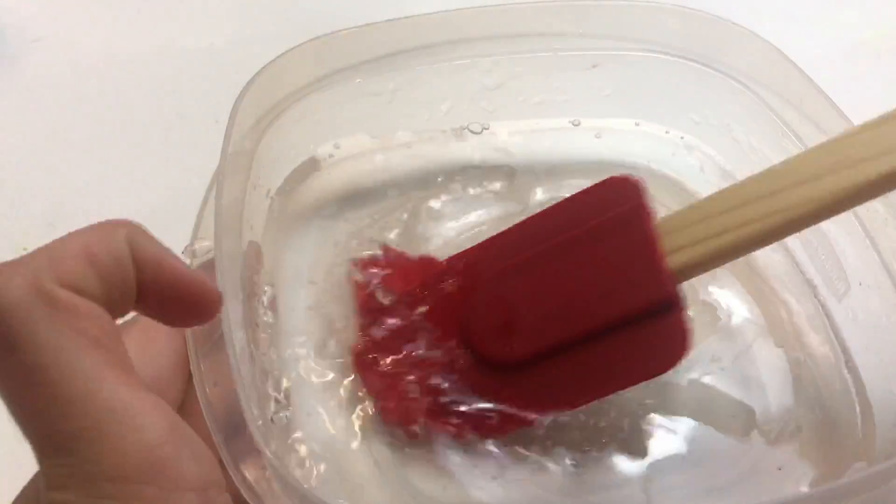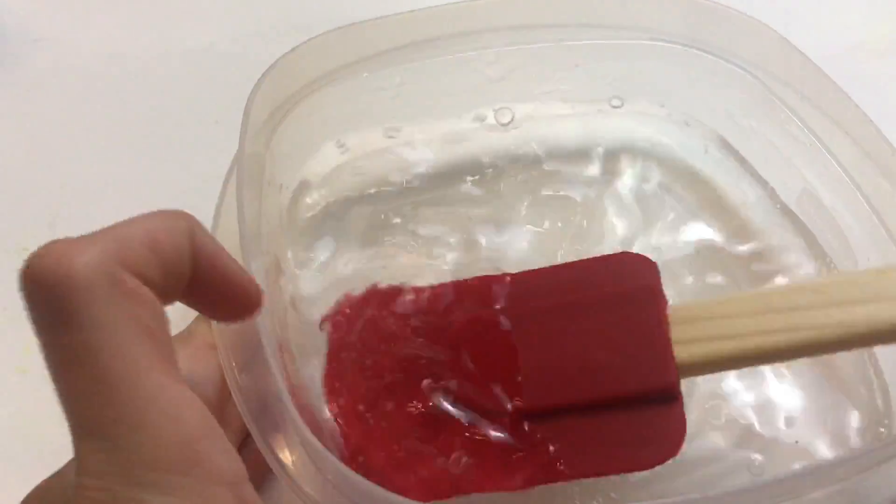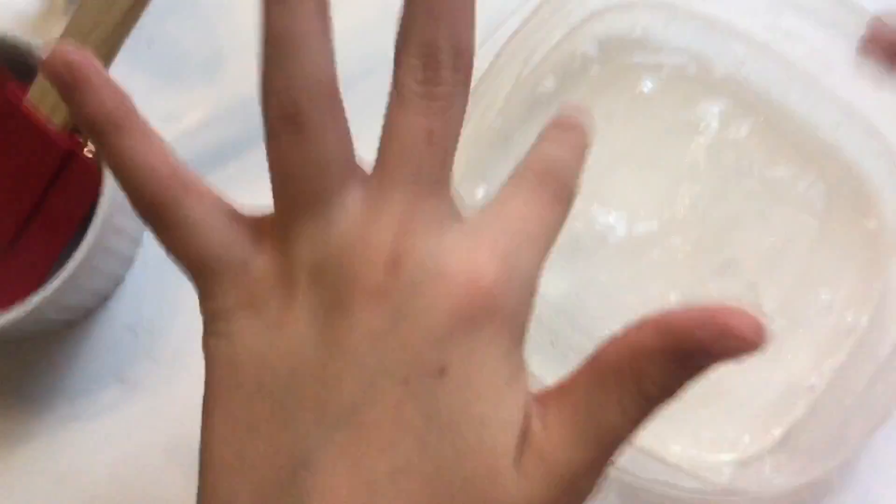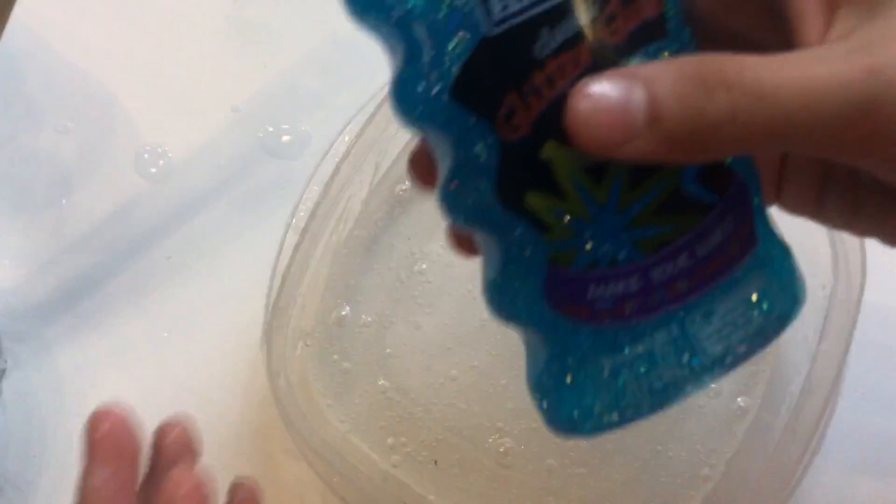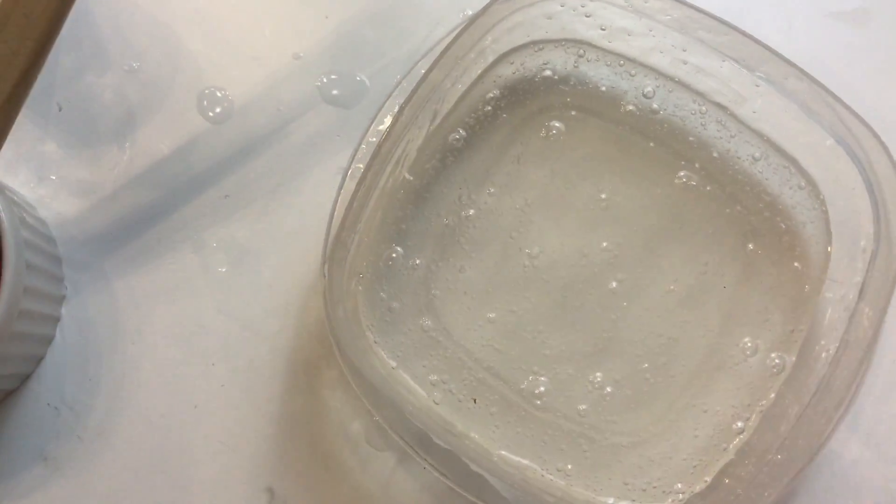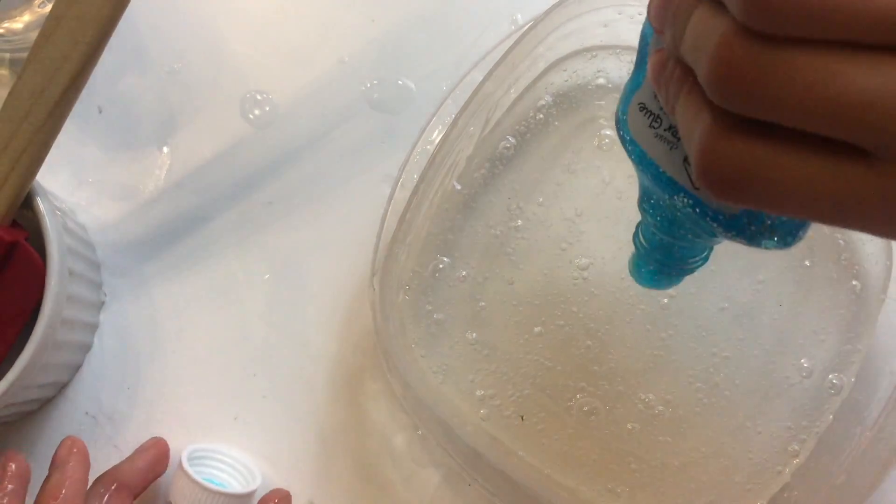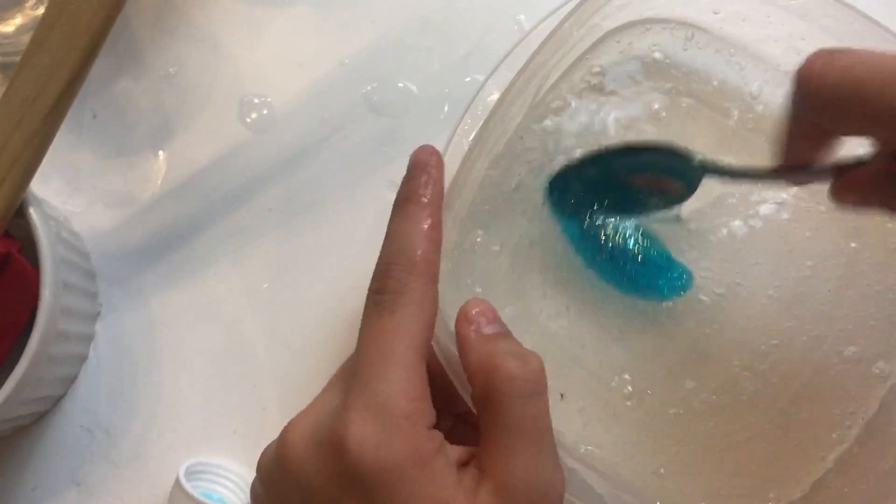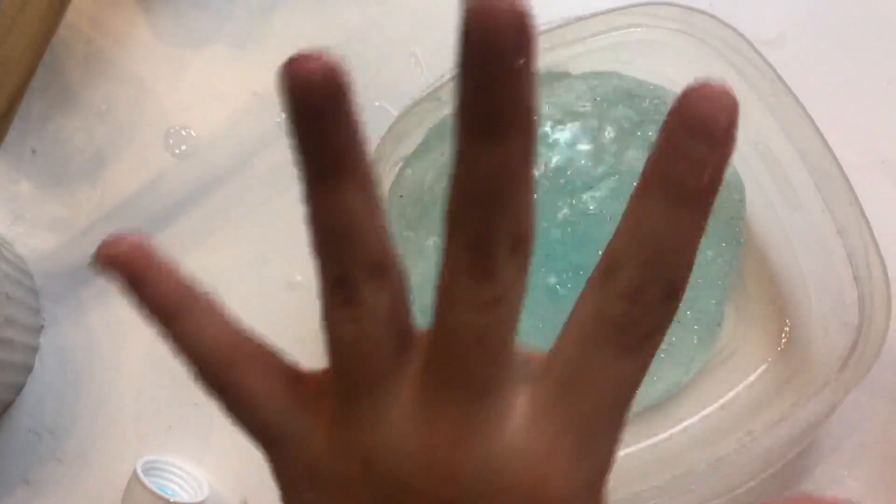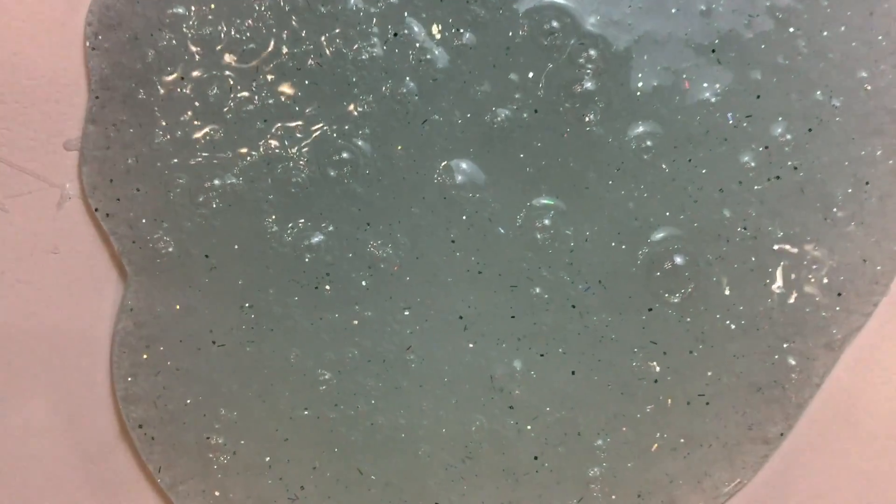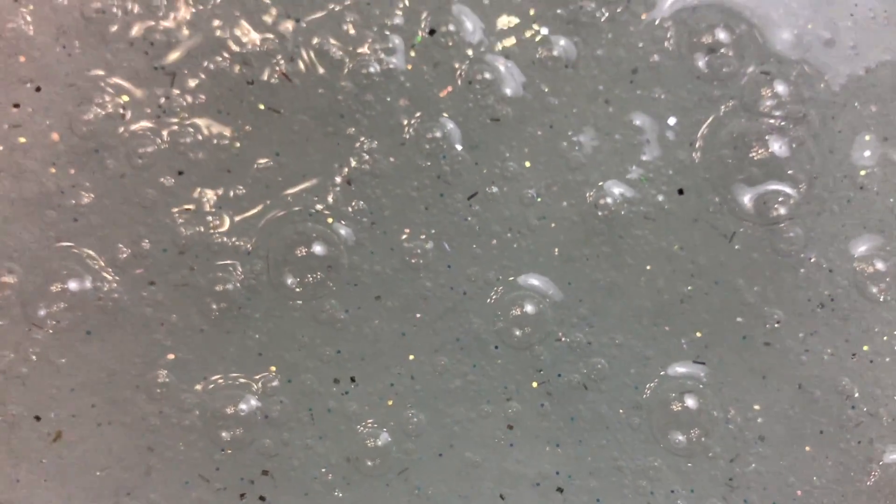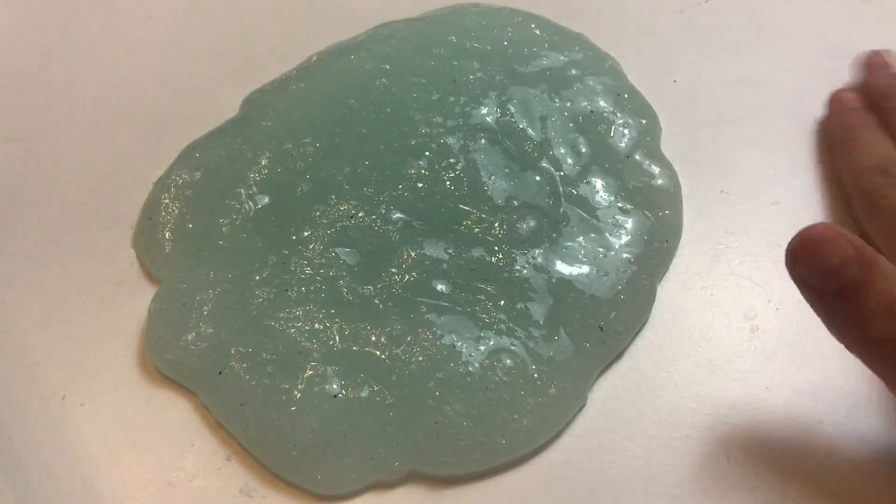And now we're just going to mix this. There we go, all the water mixed in. All right so it's kind of turning into slime now. I'm gonna put some of this glitter glue in just to make it a little bit festive, wintry, just a little bit. See how it turns out. Oh look how cute it is! All right that's good. Mix it in with my hands. Looks so much better in real life.